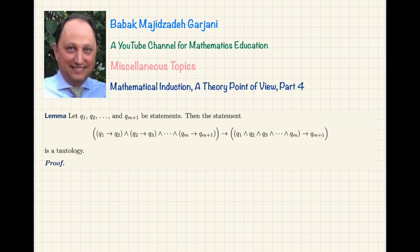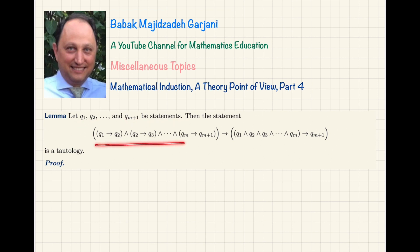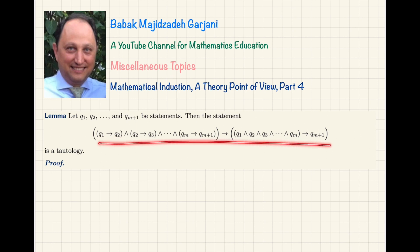Now I state a lemma in propositional logic and prove it. I will then use this lemma to prove the main theorem — SPMI implies PMI. Let Q₁, Q₂, up to Q_{N+1} be statements. Then the following statement is a tautology: it is true regardless of the logical values assigned to the individual statements Q₁ through Q_{N+1}, in any combination of true or false.